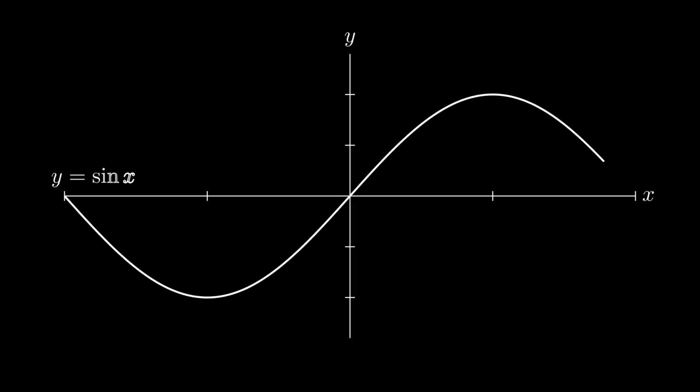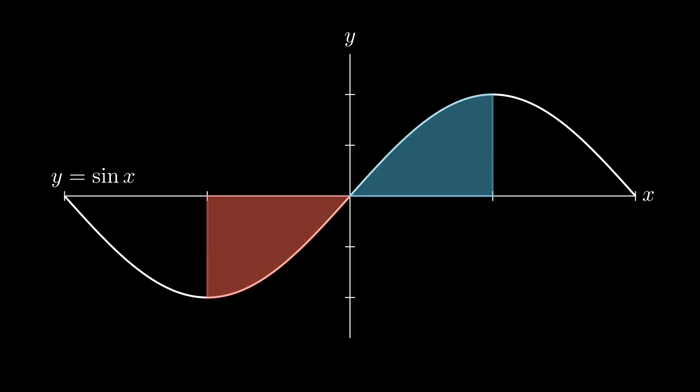Consider this graph of sine x, for instance. When the graph dips below the axis, that area counts negative; above the axis, it counts positive. That's why a definite integral is a signed total, not just size.